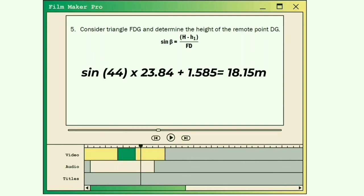The computation is: sine 44 multiplied by 23.84 plus 1.585 equals 18.15 meters.